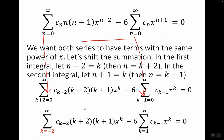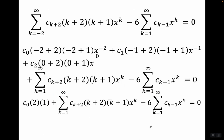Now we can add the two series together. First notice: k plus two equals zero means k equals negative two, so the first series starts at k equals negative two. And k minus one equals zero means k equals one, so the second series starts at k equals one. The first series gets a head start, starting at k equals negative two, while the second starts at k equals one.